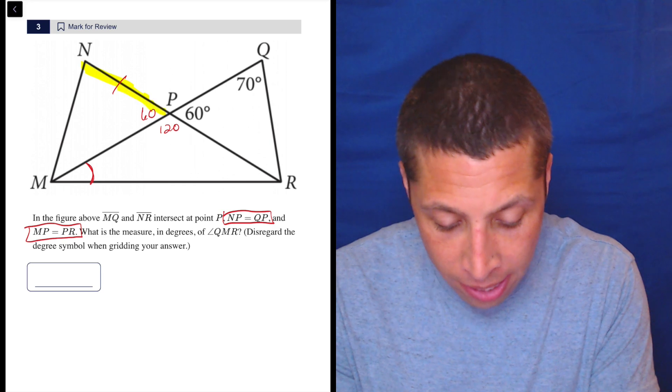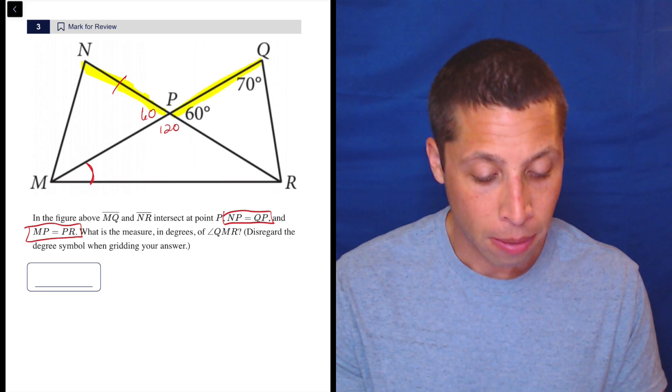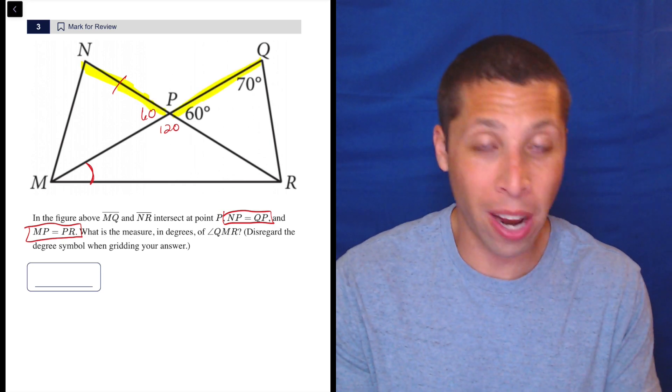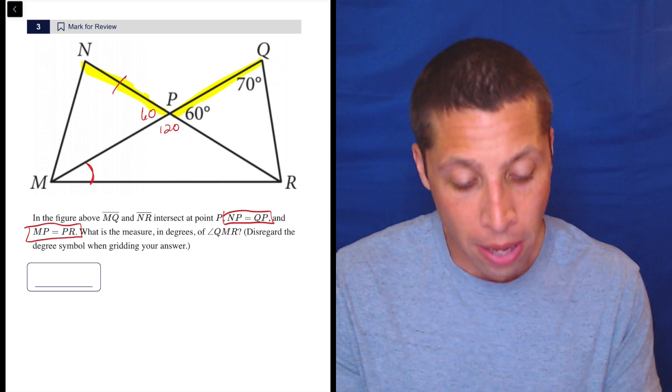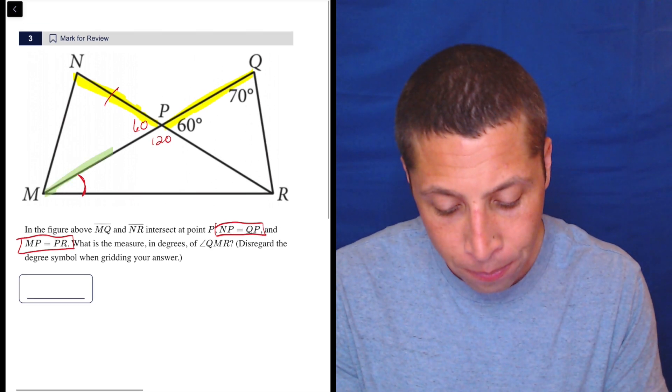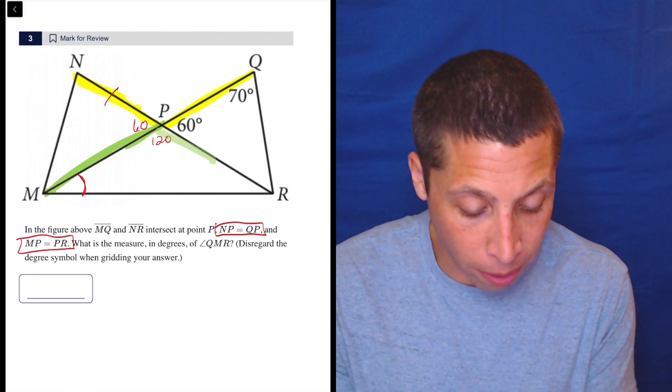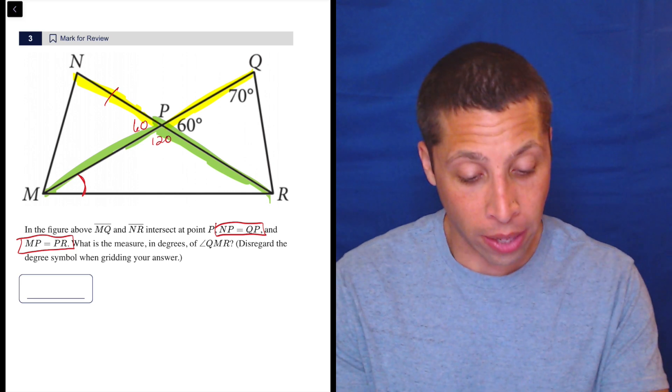Well, that's maybe good, but I don't know. Those are triangles that I don't really want anything to do with. But here, when they tell me MP is equal to PR, well, that is a triangle that I got some knowledge about, right? That 120 is there.